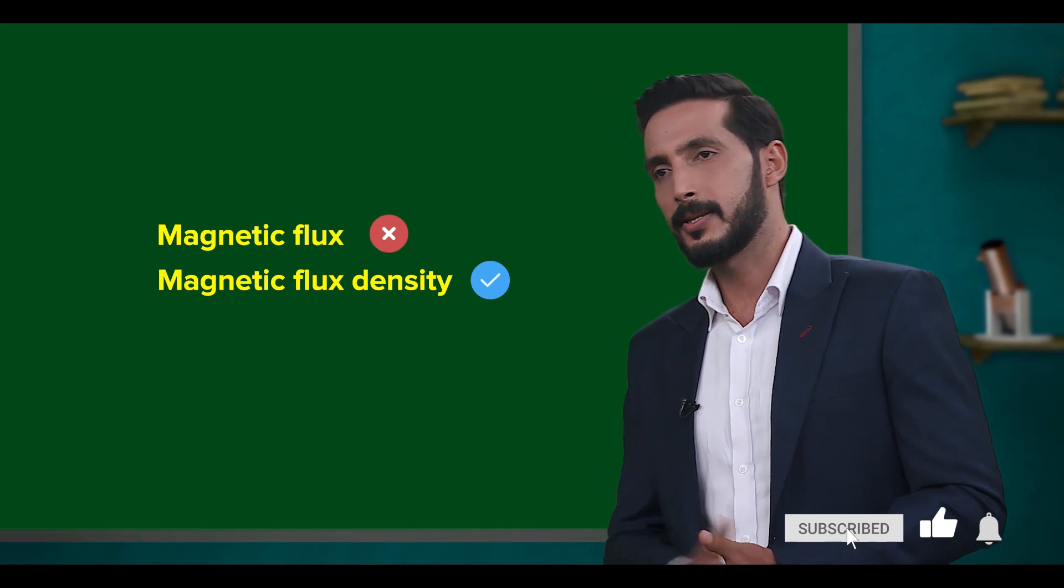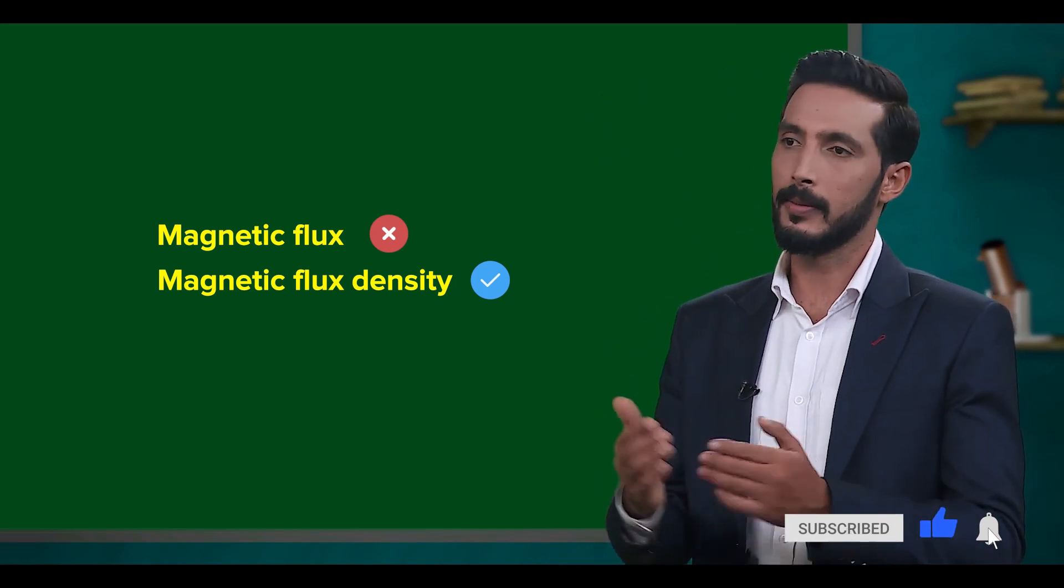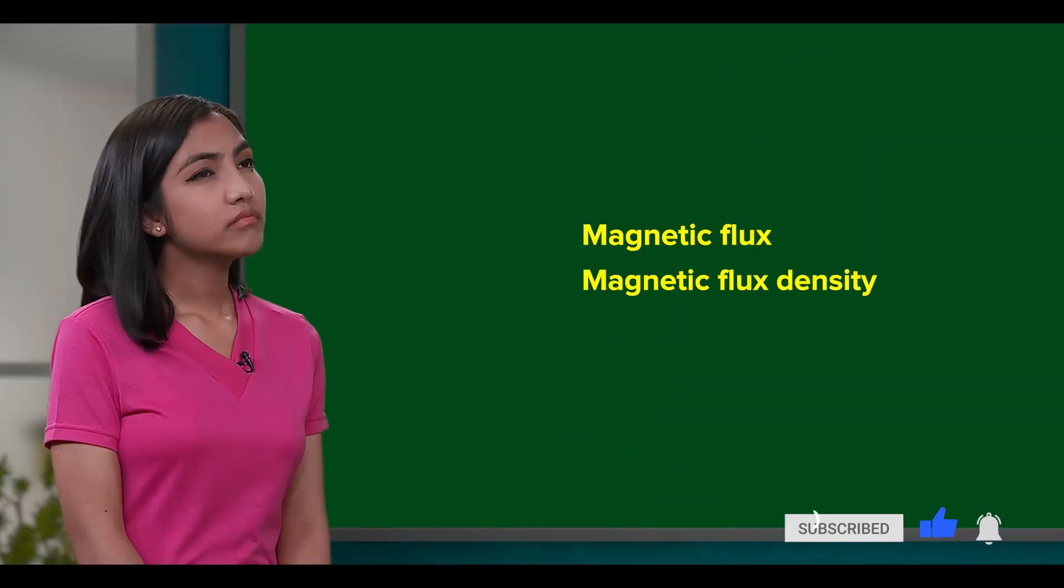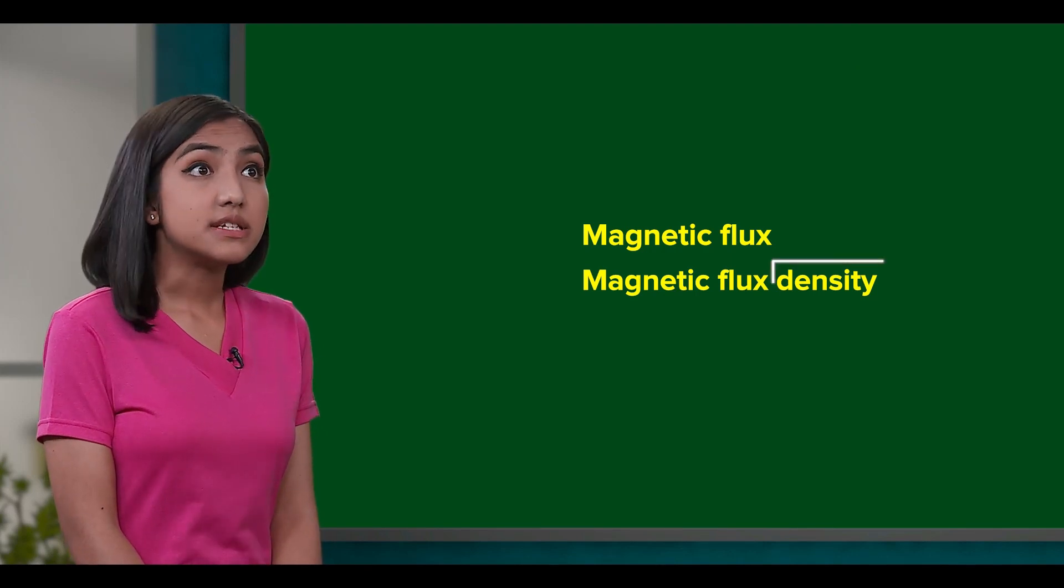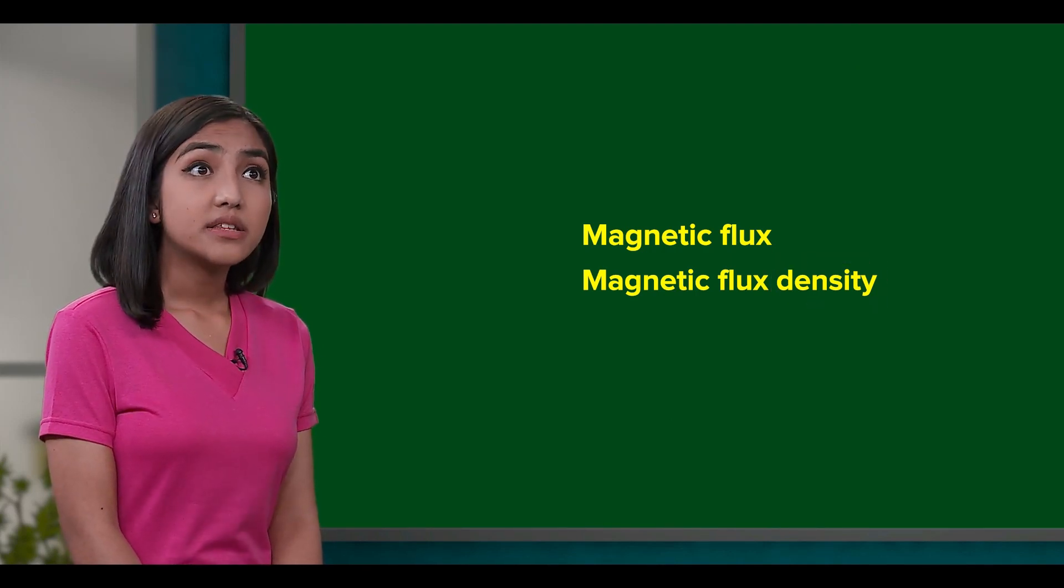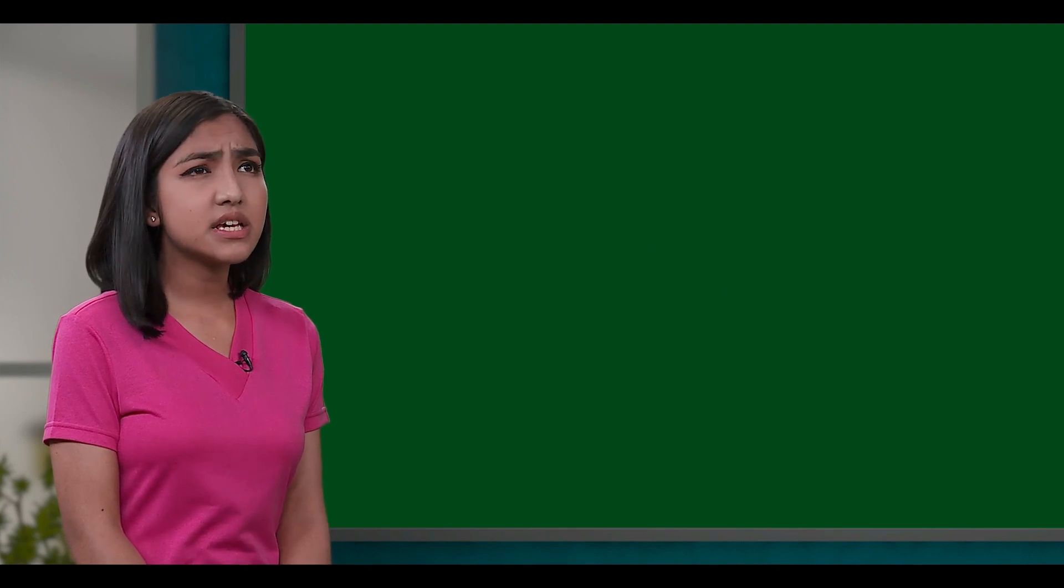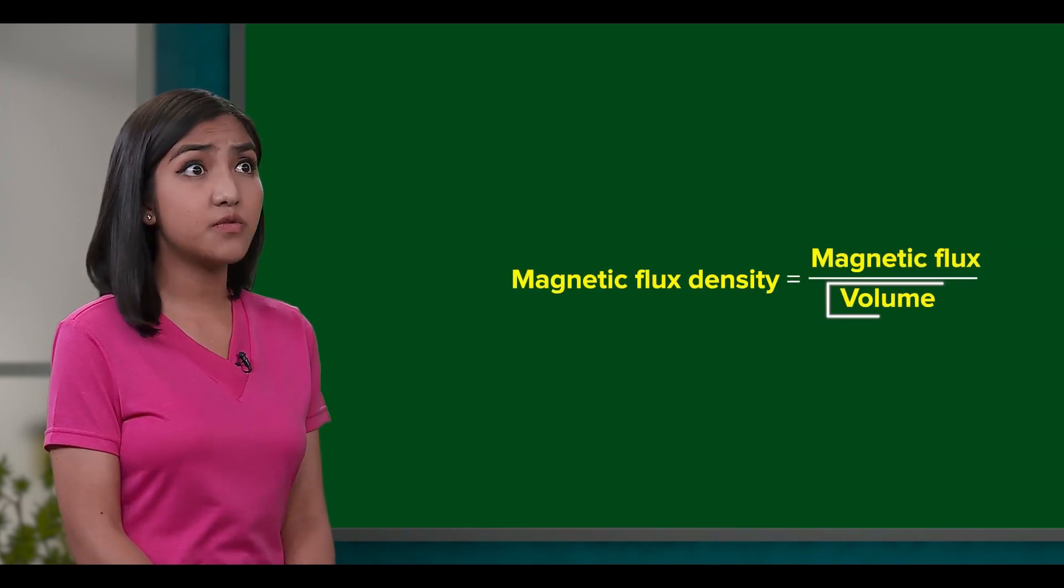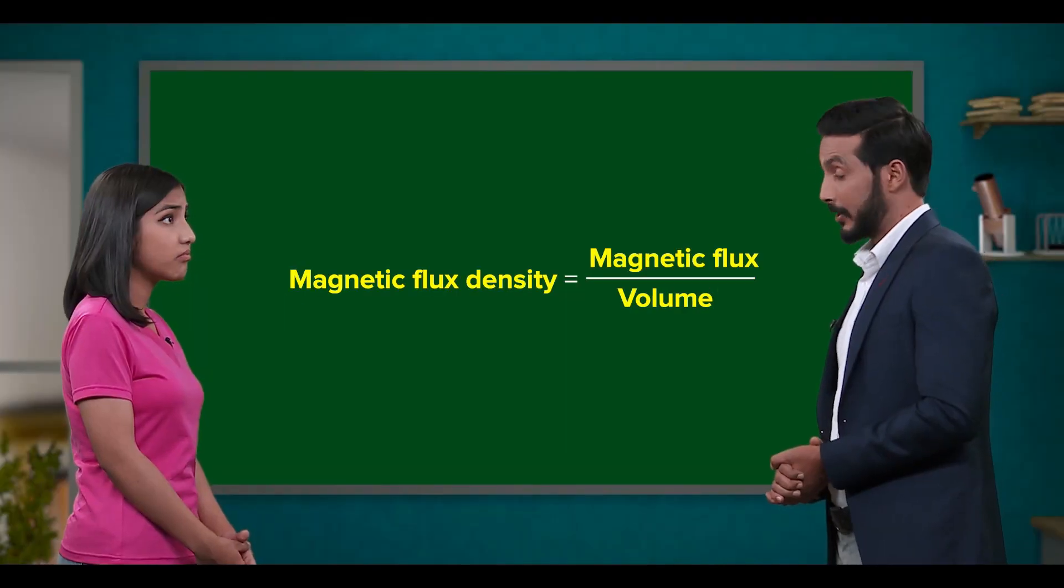So do you have any guesses on how these two quantities might be related? Hmm, if the difference between them is density, then I suspect that the magnetic flux density is magnetic flux per unit volume. That's not a bad intuition.